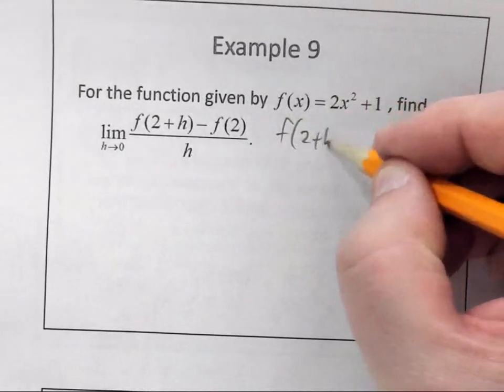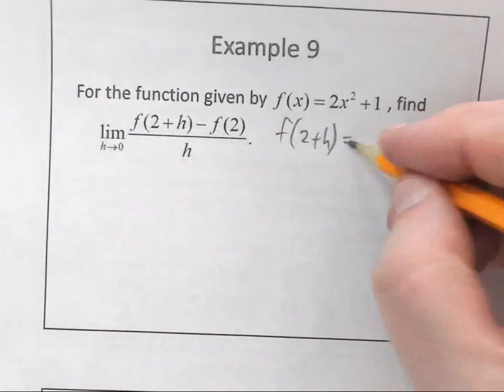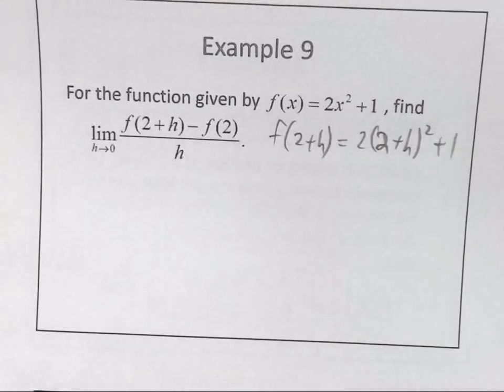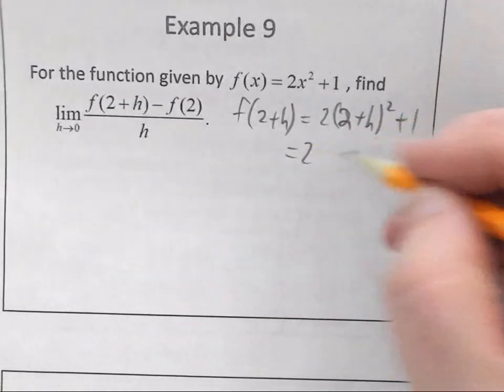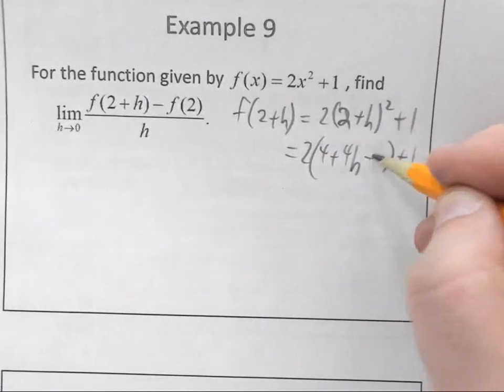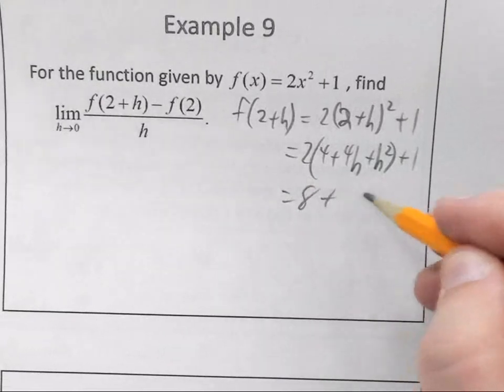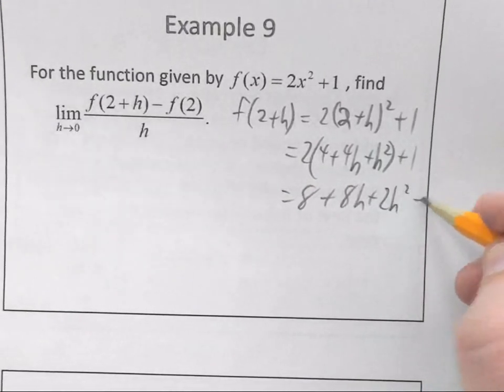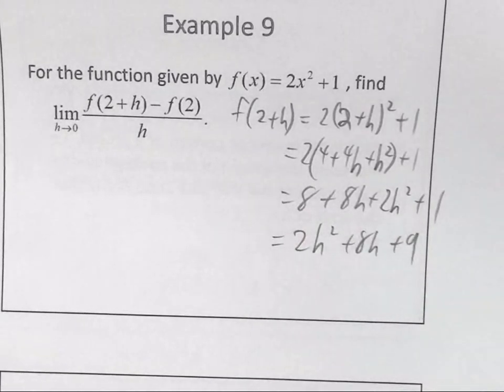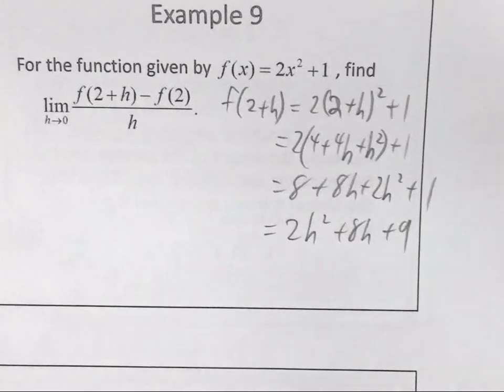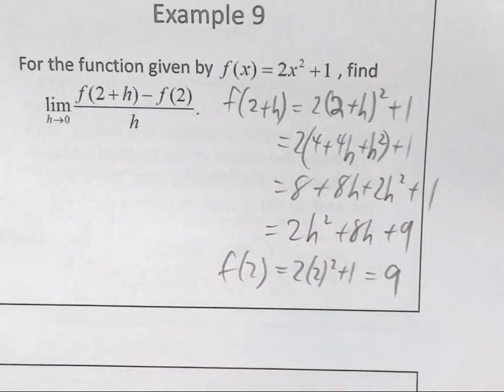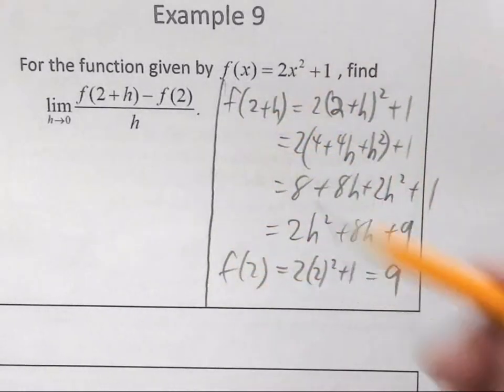Remember how to use this difference quotient. Yeah, I want to find f of 2 plus h. Because then I'm going to take that answer and put it in here. What is f of 2 plus h? So, the idea is that I just work out the x and put in 2 plus h. Simplify it. What do I get when I square 2 plus h? 4 plus 4h plus h squared. I'll show you the 2. Then what do you end up with finally? Times 2, so 2h squared plus 8h plus 9. What else do I need? f of 2. That one's a little bit easier. What's the f of 2? 9.